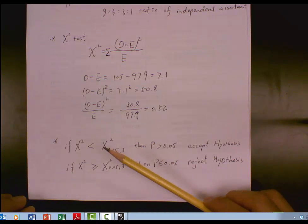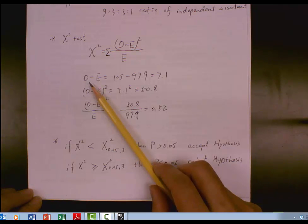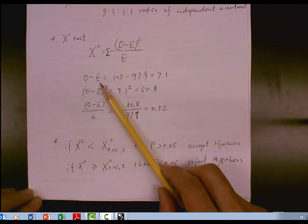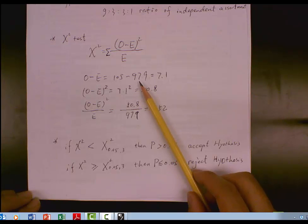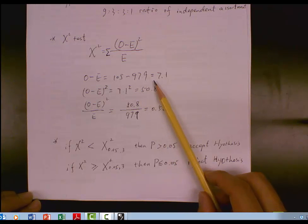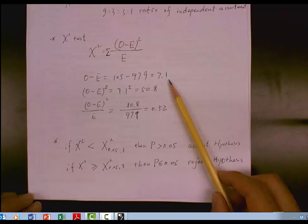In our case, the chi-square, the first group, colored dent, is calculated this way. O minus E means observed value minus expected value, is 105 minus 97.9 equals 7.1.